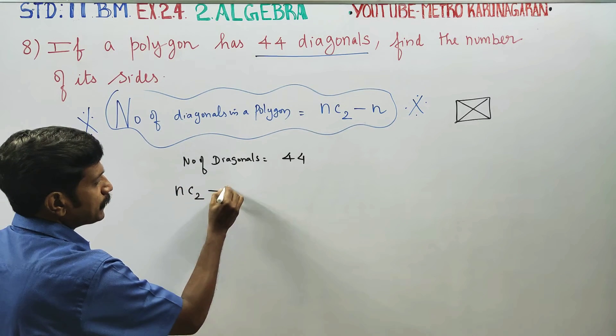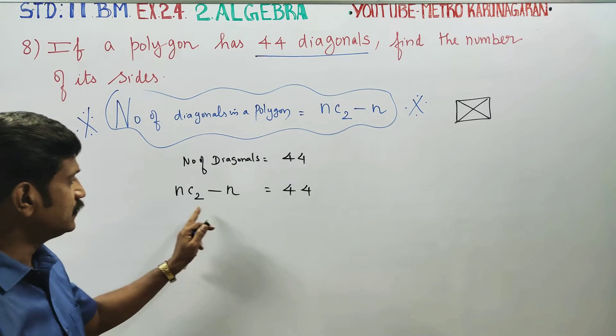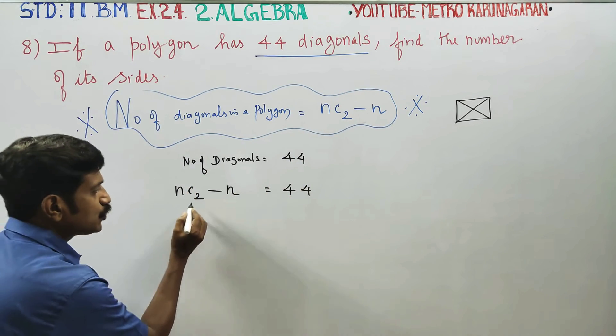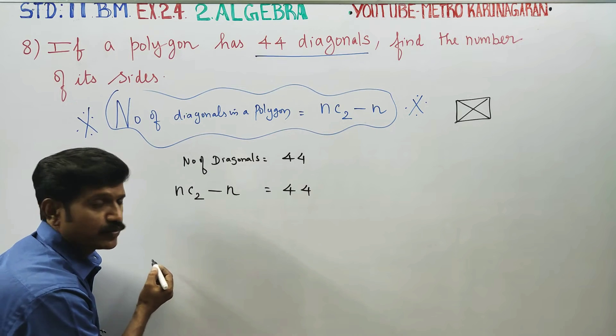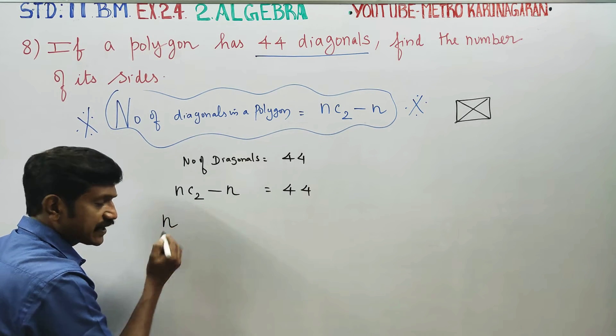Number of diagonals is equal to 44. nC2 minus n is equal to 44.